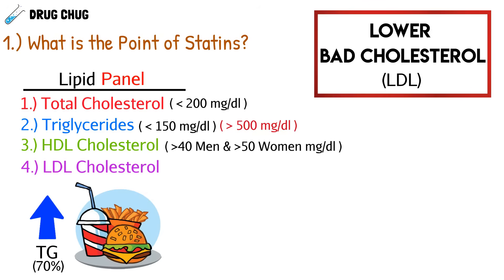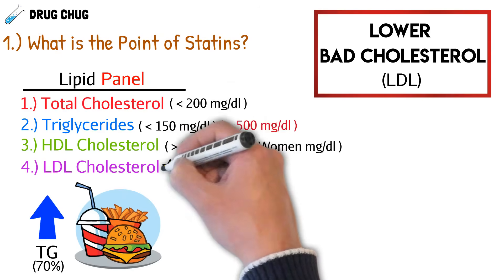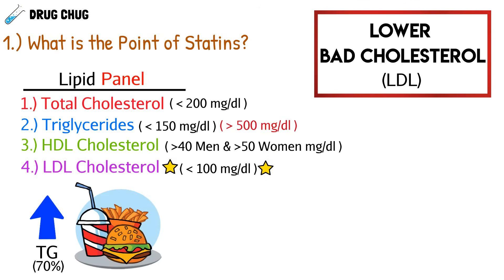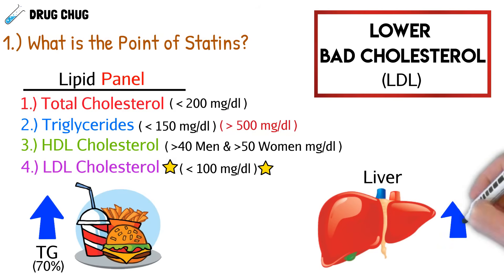Last but not least we have our LDL cholesterol, also known as our bad cholesterol — this is what we focus on when we take a lipid panel. We want less than 100 milligrams per deciliter. The majority of this cholesterol is synthesized in our liver, so the point of statins is to lower our LDL, and that's where statins target.